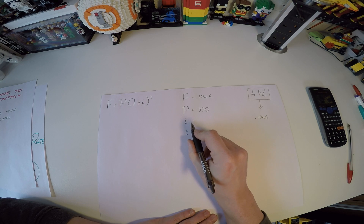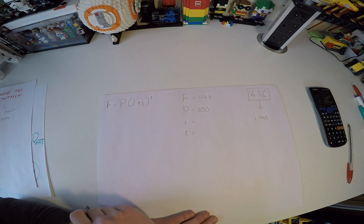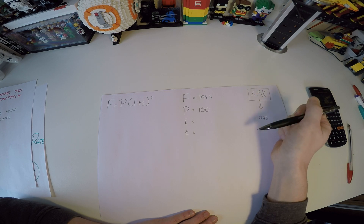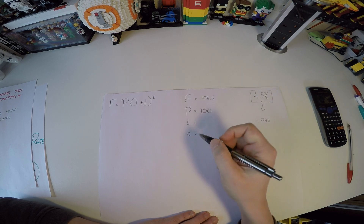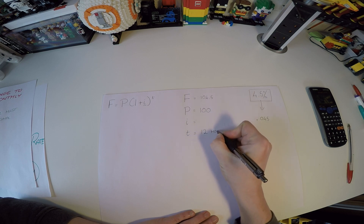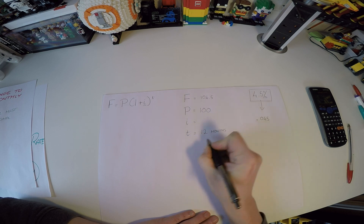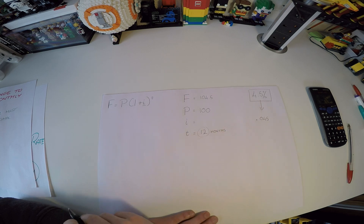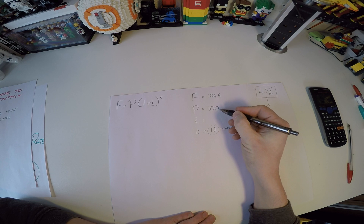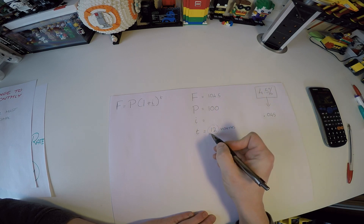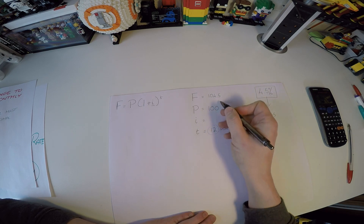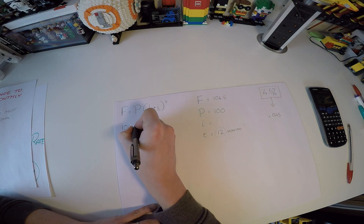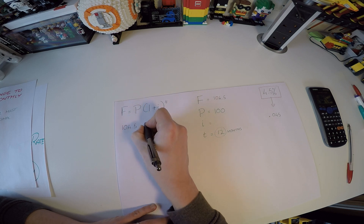We cannot fill in i because we're solving for it. But if it takes one year to get 4.5 percent bigger, it must take 12 months to get there. By replacing t with 12, the time will match a monthly interest rate. So we've taken a principal of 100, increased it by the annual percentage, and changed the time from one year to 12 months. Putting these numbers in: 104.5 equals 100 times (1 + i) to the power of 12.